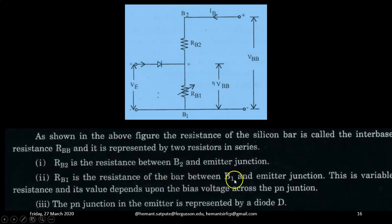RB1 is the resistance of the bar between B1 and the emitter junction. So RB1 is the resistance between the emitter lead and the base B1 junction. Now this is a variable resistance and its value depends upon the bias voltage across this PN junction. The PN junction in the emitter is represented by a diode D. So this is the representation of that PN junction.